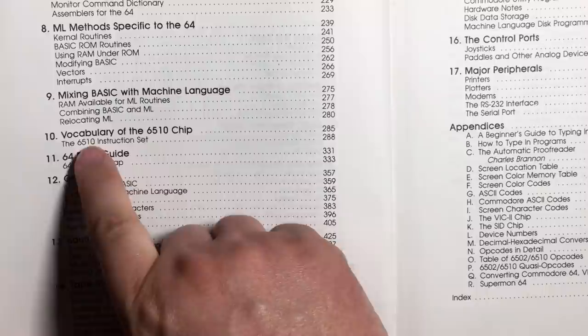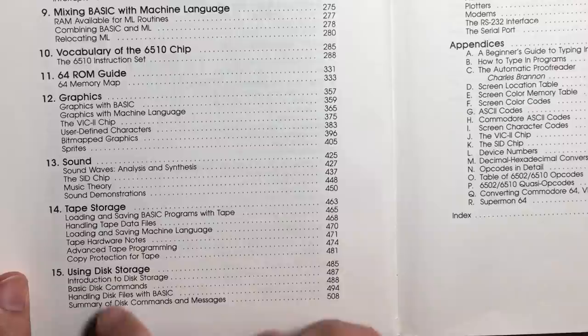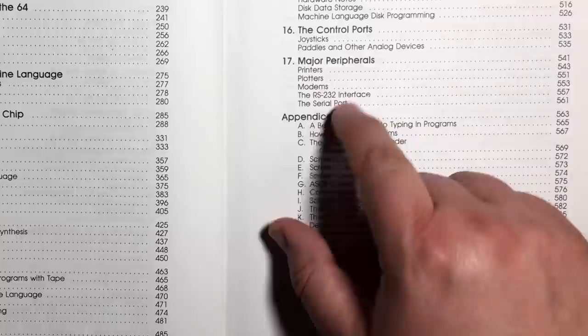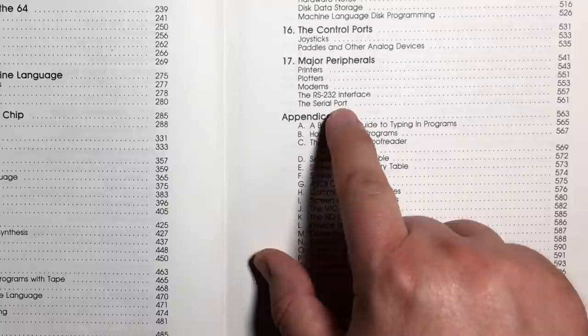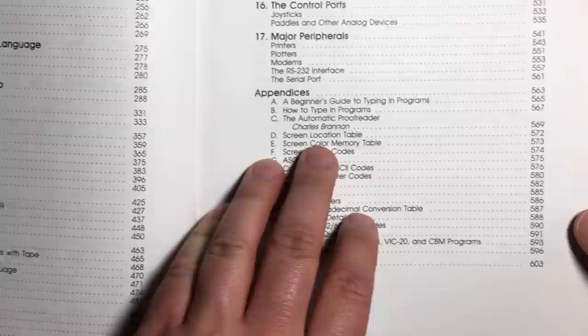Ten, vocabulary of the 6510 chip, the instruction set. And then in-depth chapters about the 64 ROM guide, a good memory map, graphics, sound, tape storage, disk storage, the control ports, major peripherals and a section on printers, plotters, modems, the RS-232 interface and the serial port. And then finally, a bunch of appendices about all sorts of things. How to type in the programs, proofreaders, and so on. So you see in total, the index at the end, the index starts on page 603. And just to give you an overview, look how dense every single page is.